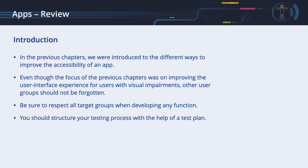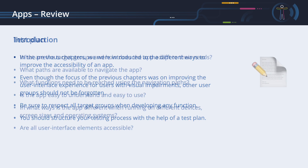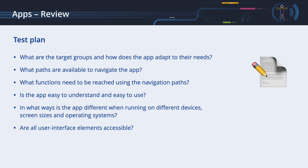Be sure to respect all target groups when developing any function. You should structure your testing process with the help of a test plan. Here is a short list of points to cover: What are the target groups, and how does the app adapt to their needs? What paths are available to navigate the app? What functions need to be reached using the navigation paths? Is the app easy to understand and easy to use? In what ways is the app different when running on different devices, screen sizes, and operating systems? Are all user interface elements accessible?